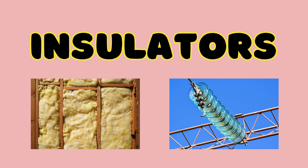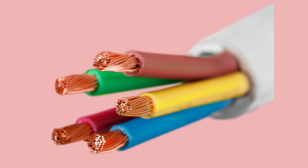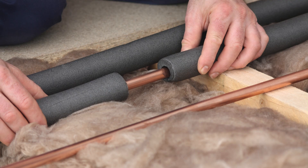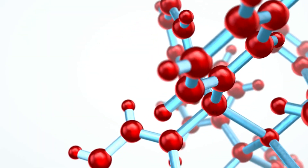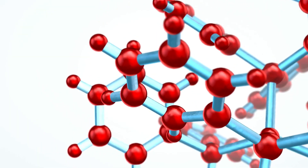Other materials that we should know while learning about electricity are insulators. Insulators are materials that do not allow the flow of electric current or heat through them easily. Insulators have tightly bound electrons that do not move freely, which prevents the transfer of electrical energy or heat.